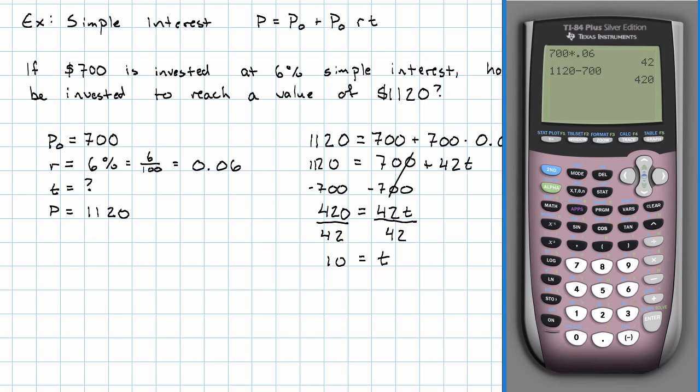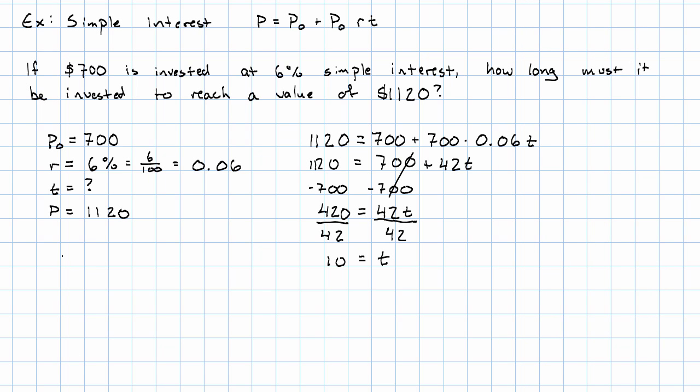T represented the number of years the money had to be invested. So, it has to be invested for 10 years. Again, what did we do? We plugged in everything we knew, and then we solved the resulting equation.